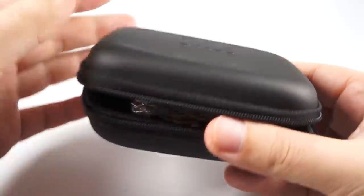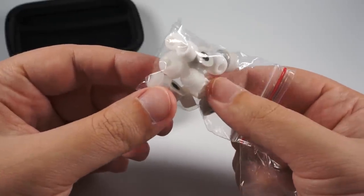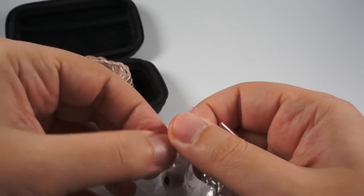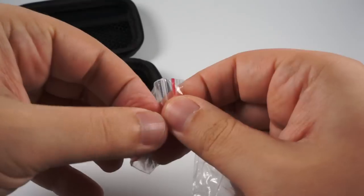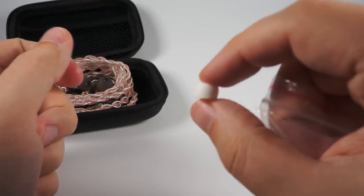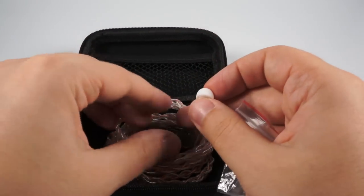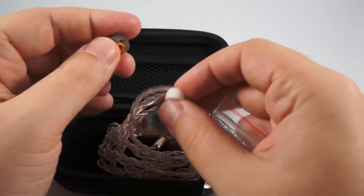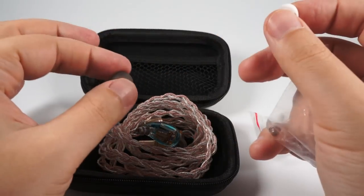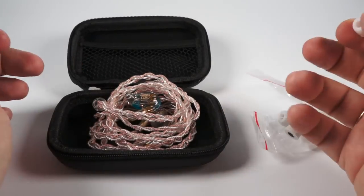Pretty traditional but big case you can use to store your DAP, for example. You also get a good set of tips: two pairs of foam, two pairs of double-flange silicone tips, and three pairs of single-flange silicone tips. They're a bit unusual - they're shallower than traditional tips. There's also a pair of replaceable filters for sound tuning, and of course the in-ear monitors themselves with cable. Build quality is nothing but great.